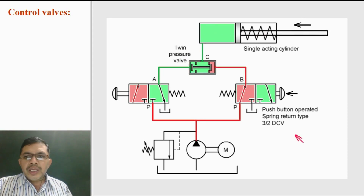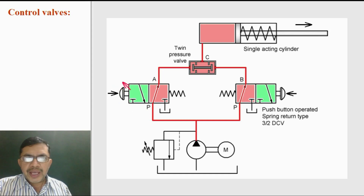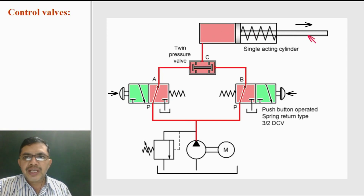The cylinder will not extend. If both valve A and valve B are pressed together, then fluid flows to the valve from both sides and the spool will stay somewhere in between, and fluid flows to port C and the cylinder will extend.